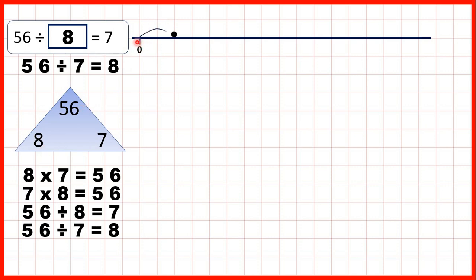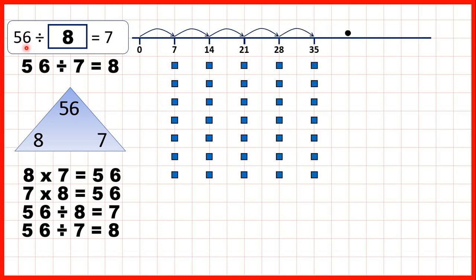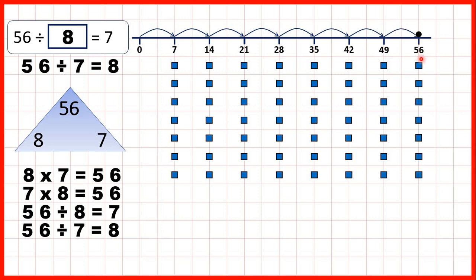To show this on a number line, we count on in steps of 7 until we get to 56. Because the 8th jump takes us to 56, we know that 56 divided by 8 must be 7.